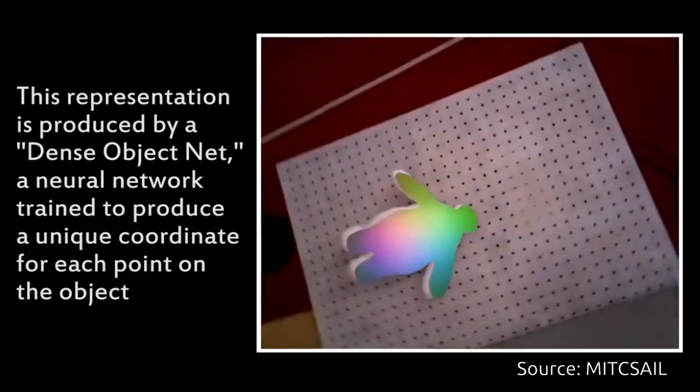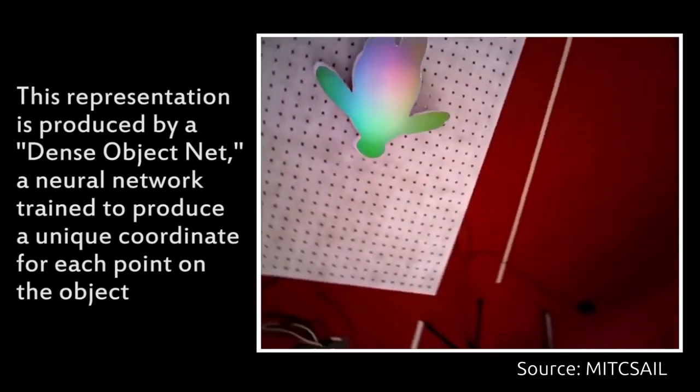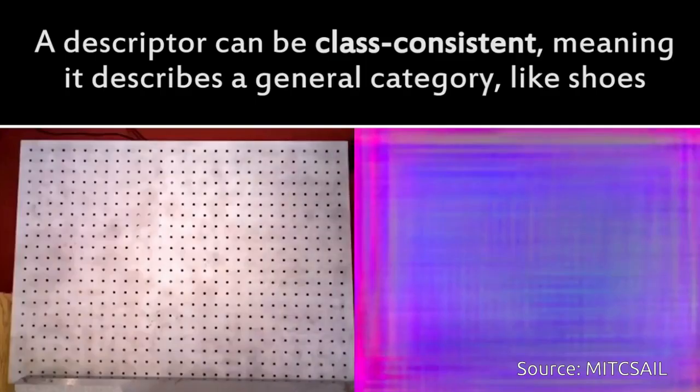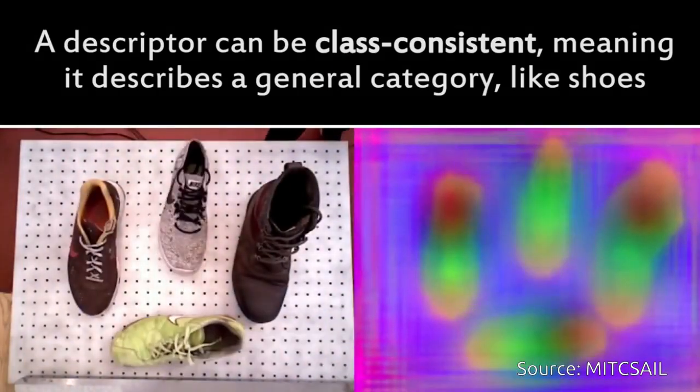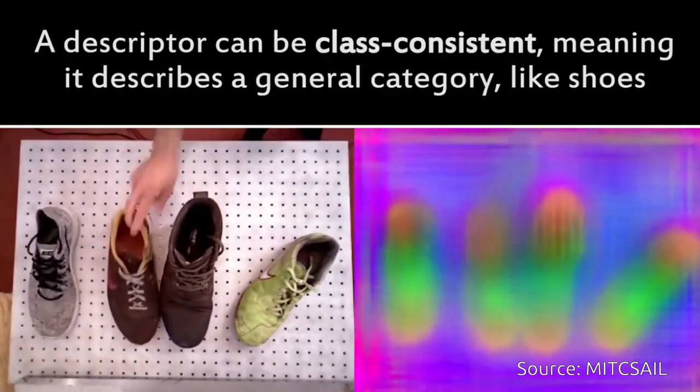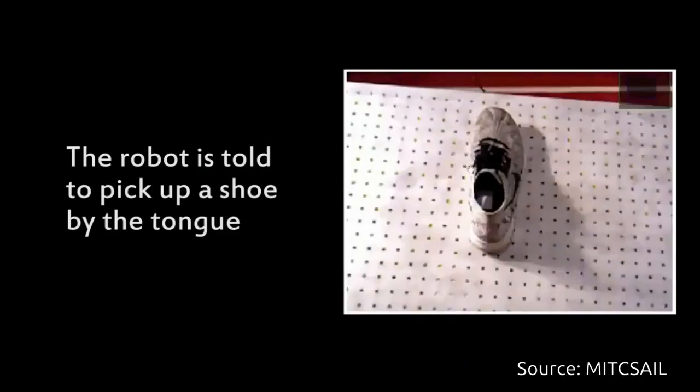After training, if a person specifies a point on an object, the robot can take a photo of that object and identify and match points to be able to then pick up the object at that specified point.